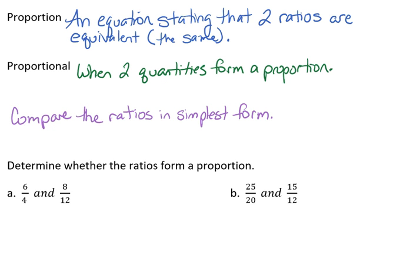So the first thing we're going to do is take 6 fourths, and we're going to go ahead and reduce that down. And we can do that by looking at what will go into 6 and 4. And we see that 2 will go into that. So 2 goes into 4 twice, and into 6 three times.